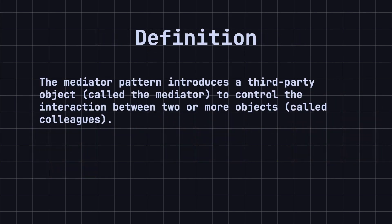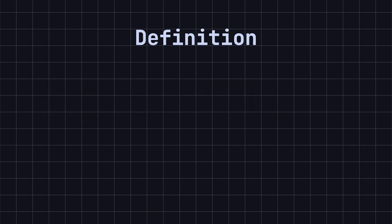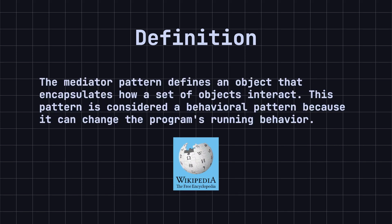In simple terms, the mediator pattern introduces a third-party object called the mediator to control the interaction between two or more objects, called colleagues. This reduces the coupling between classes as they no longer need to know each other's implementation details. According to Wikipedia, the mediator pattern defines an object that encapsulates how a set of objects interact. This pattern is considered a behavioral pattern because it can change the program's running behavior.